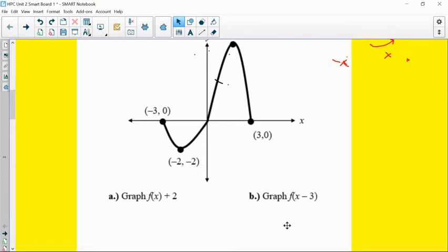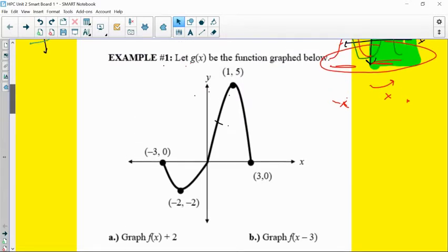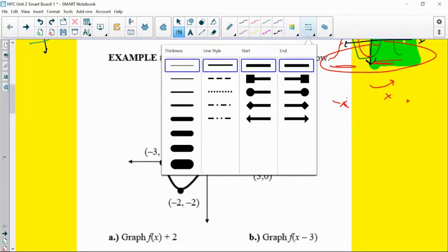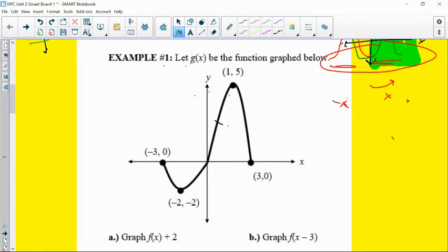The graph here is some function that has some key points, and it's asking us to take... I see a typo already. It says let g of x be this graph, and these are all transformations in terms of f. I sometimes update things and maybe forgot to save. So let's make it match up and call this f of x, since all of them are transformations. I apologize for that.